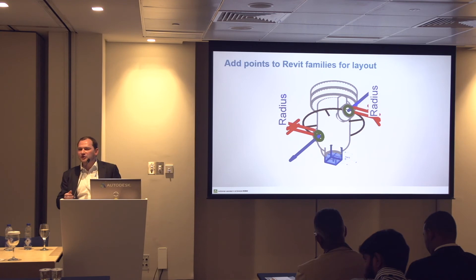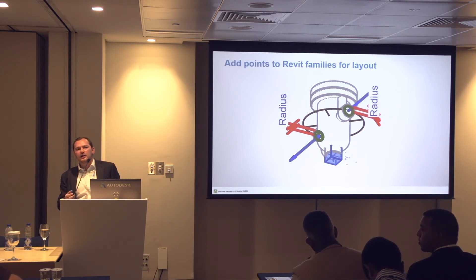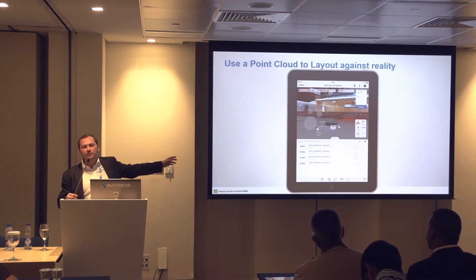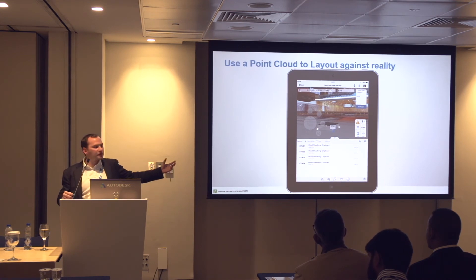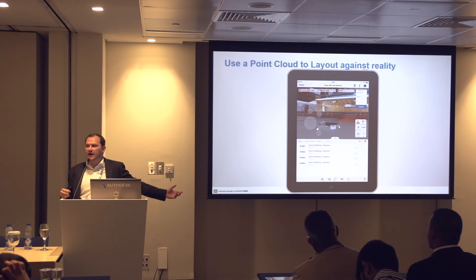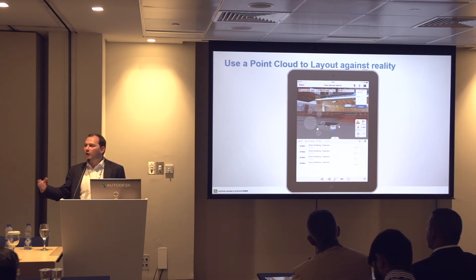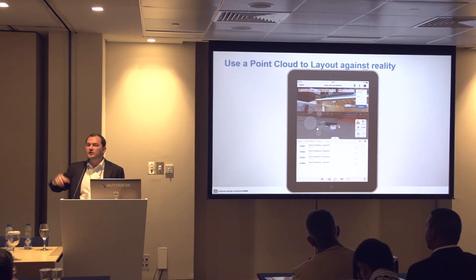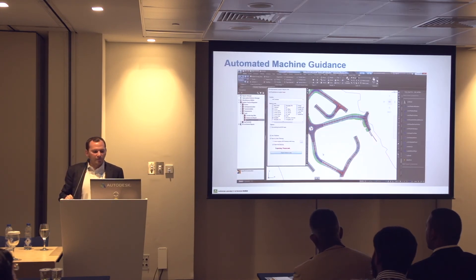BIM 360 Layout is the tool that allows you to bring your 3D model out onto site. One of the proof-of-concept workflows we've been working on with hardware partners Topcon and Leica is how to make this more relevant and more real. We've been looking at how you can bring in a point cloud onto your iPad to then do layout against reality as opposed to the design intent, which may be wrong. This could allow someone to scan a room, bring in the design intent of their HVAC, and then lay that out against what's actually there, rather than a model which might be out of date.